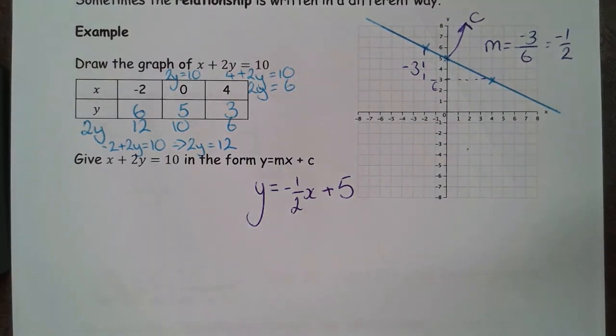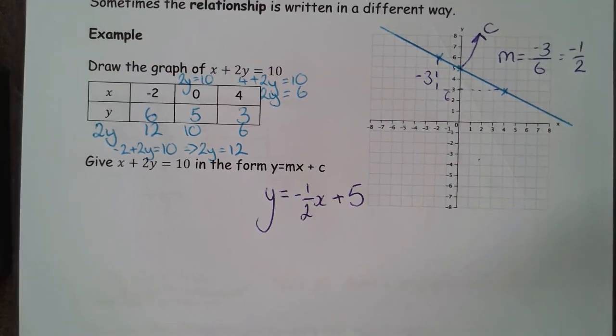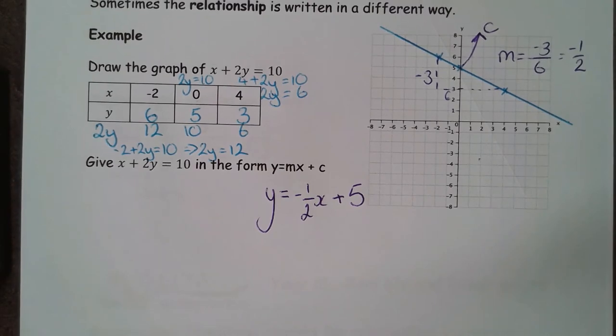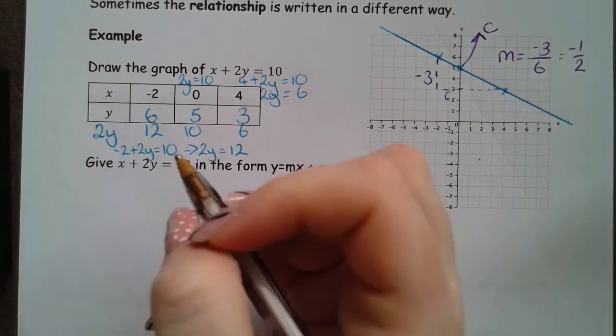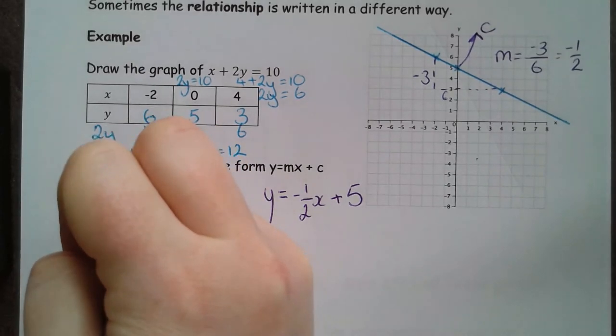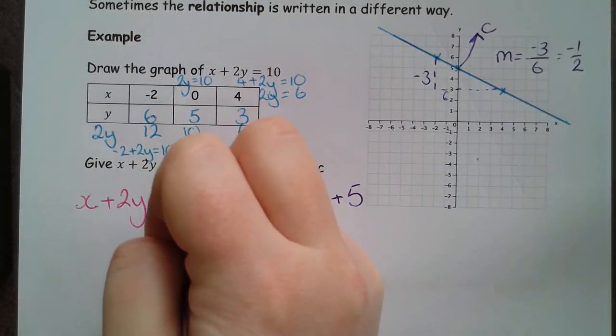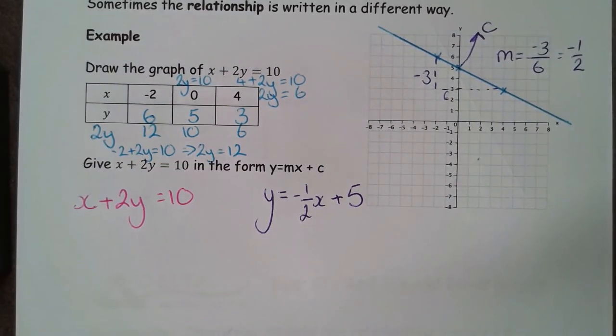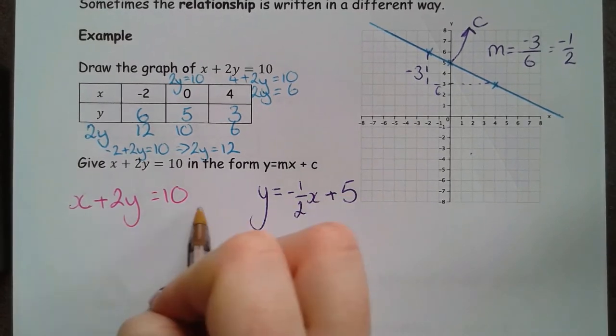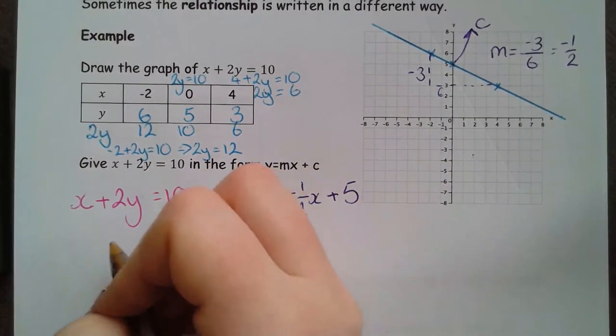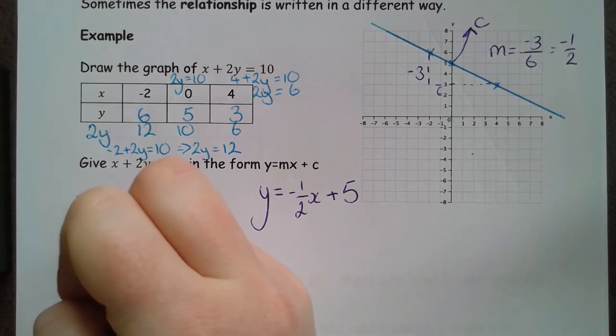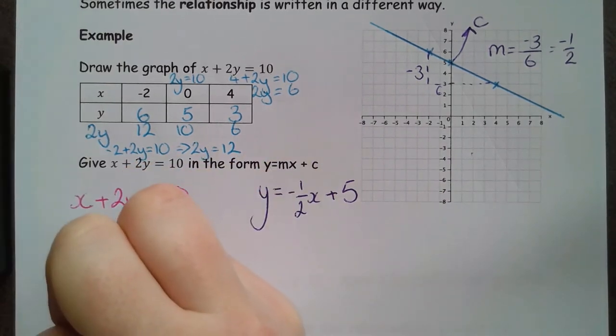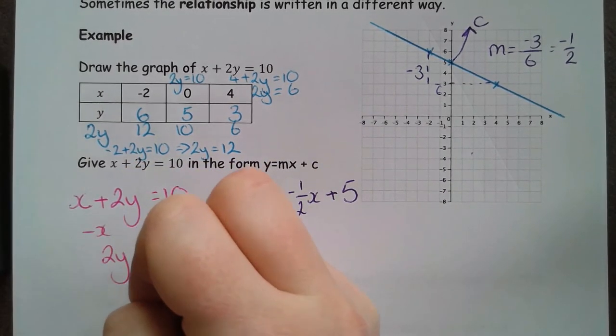I'm also going to do this by changing the subject. So, if I was to do this by changing the subject, I want that y to be by itself. For that y to be by itself, all I'm going to do is take x off both sides. So, I got 2y equals 10 minus x.